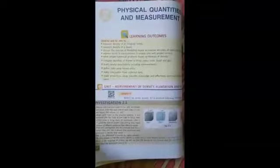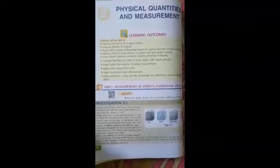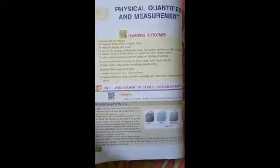We will discuss the second chapter: physical quantities and measurement. In this chapter we will discuss measurement of density, flotation and sinking. So what is density? The mass per unit volume of a substance is called its density.